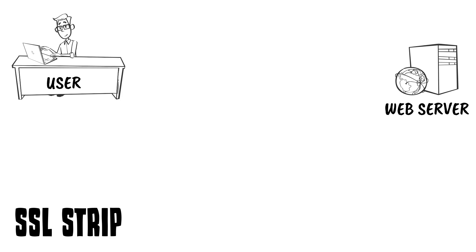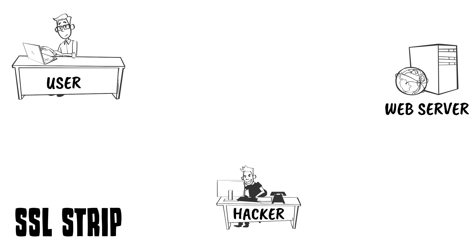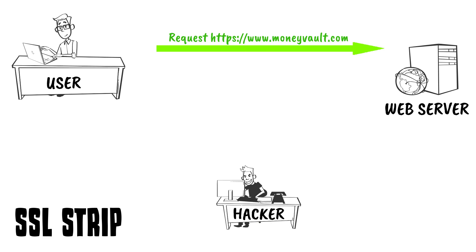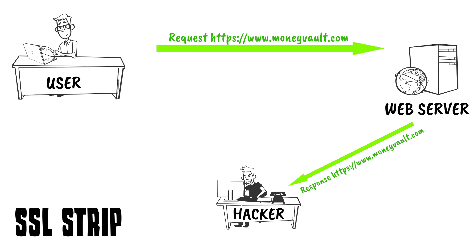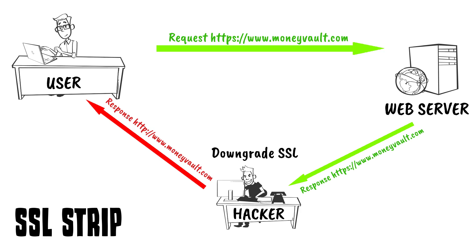In an SSL Strip attack, a hacker comes in between the user and the web server. When the user requests access to MoneyVault.com and the web server responds with HTTPS MoneyVault.com, it goes through the hacker, and the hacker strips the HTTPS and downgrades it to use HTTP. The data is no longer protected.